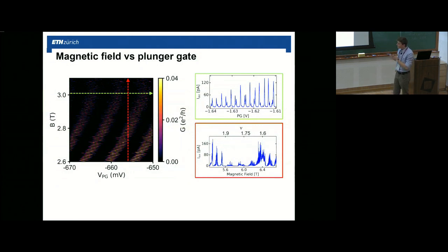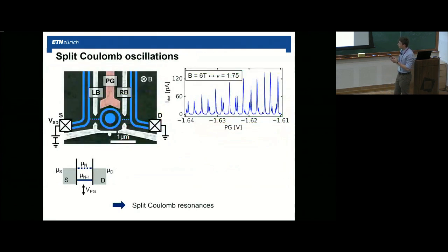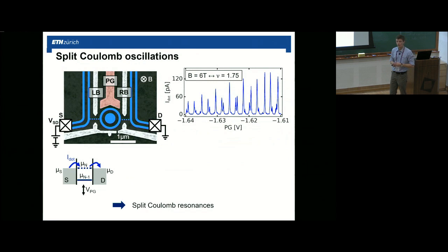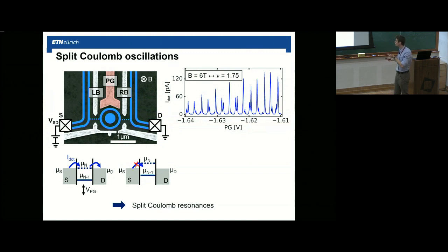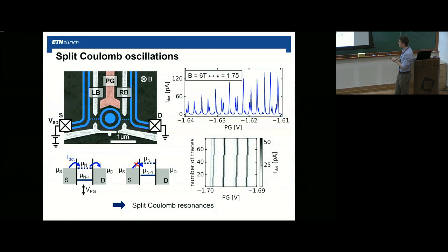We want to understand this step by step, starting with the plunger gate dependence. If we change the plunger gate, we shift our energy levels in the quantum dot and get a peak whenever energy levels align with the electrochemical potential of the contacts. What we actually observe is that some peaks split and show a double peak feature. We repeat this measurement over more than 60 traces and see that those split peaks are preserved — even after charge rearrangements the effect is stable. So we have reproducible split Coulomb resonances as a function of plunger gate.